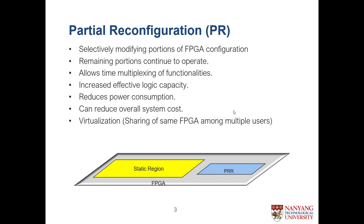We call the traditional approach spatial multiplexing. Partial reconfiguration provides an alternative using temporal multiplexing instead. The idea is you will be modifying only part of the FPGA instead of reconfiguring the entire FPGA fabric — that is the definition of partial reconfiguration: selectively modifying a portion of the FPGA. The remaining part will still be operational while the reconfiguration is in progress, unlike traditional reconfiguration.